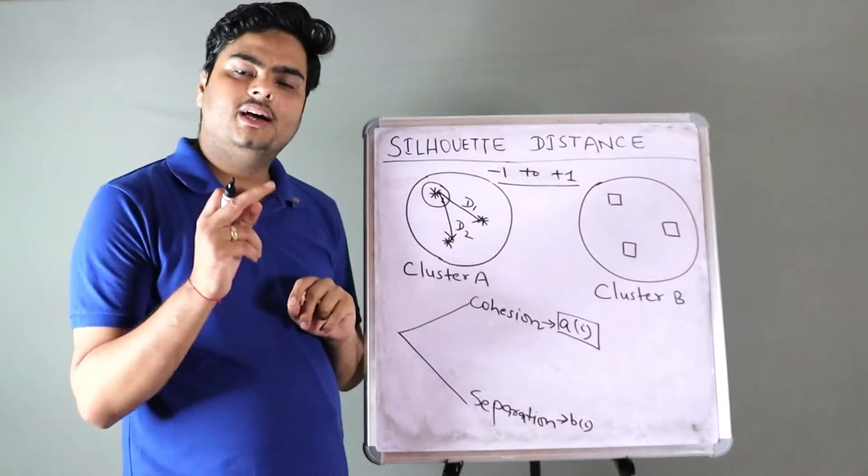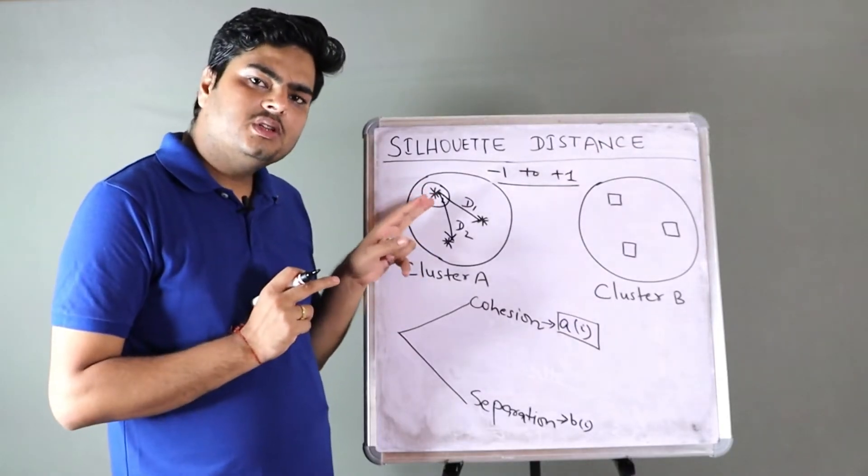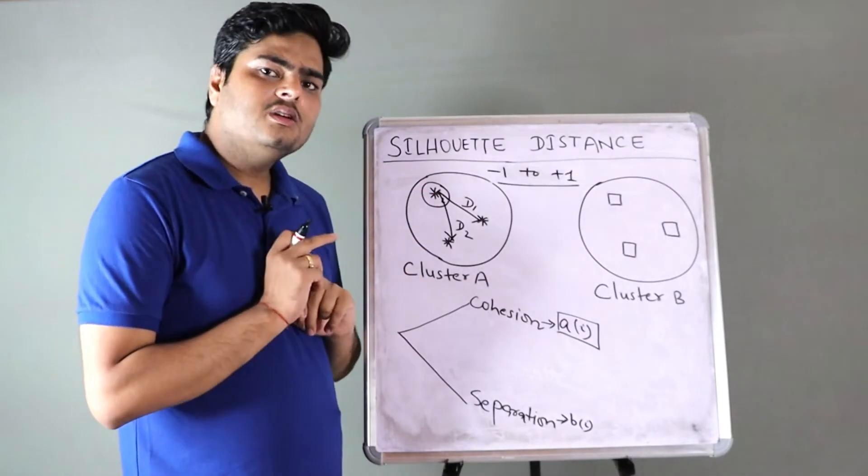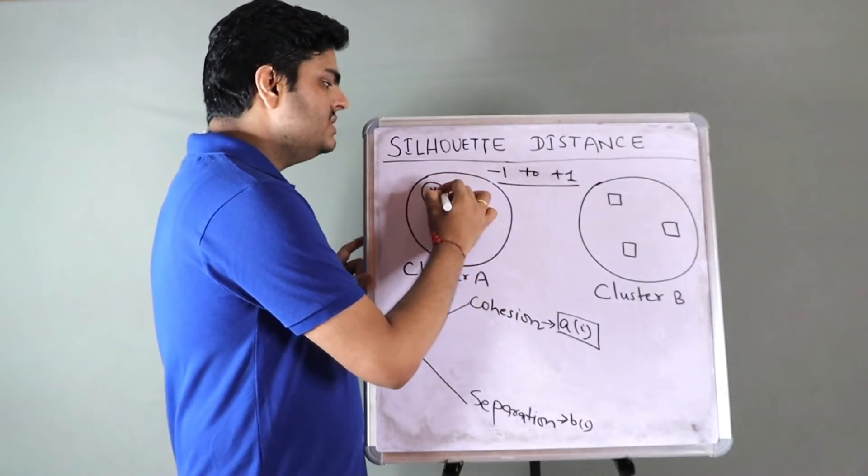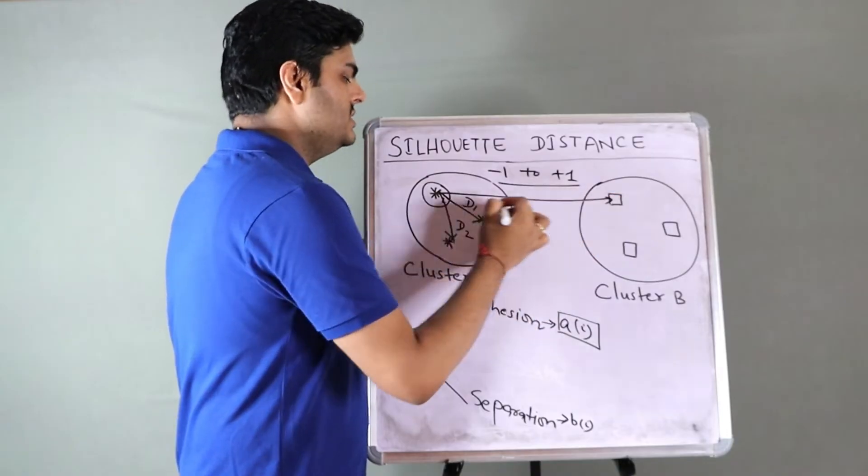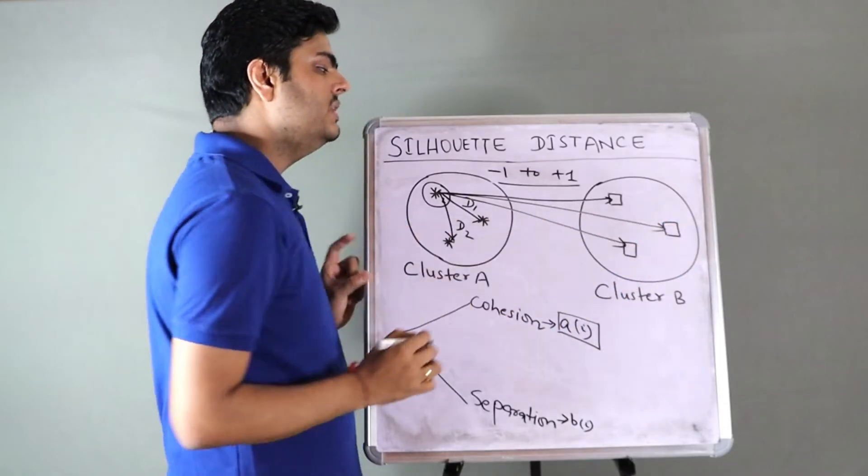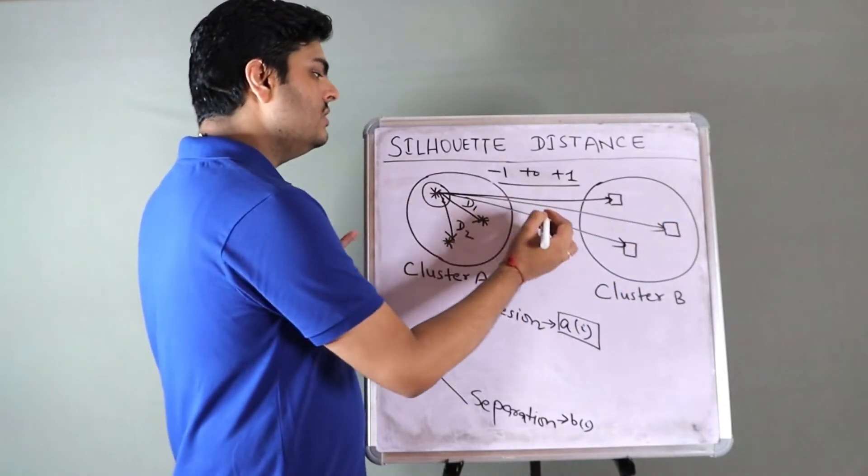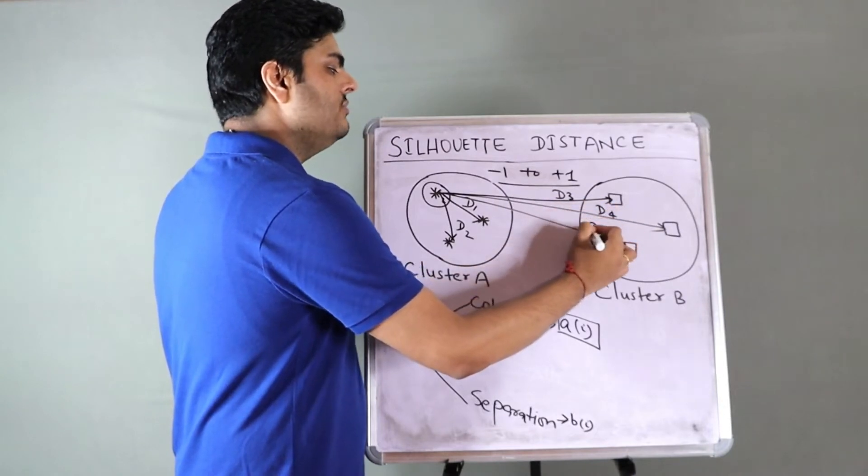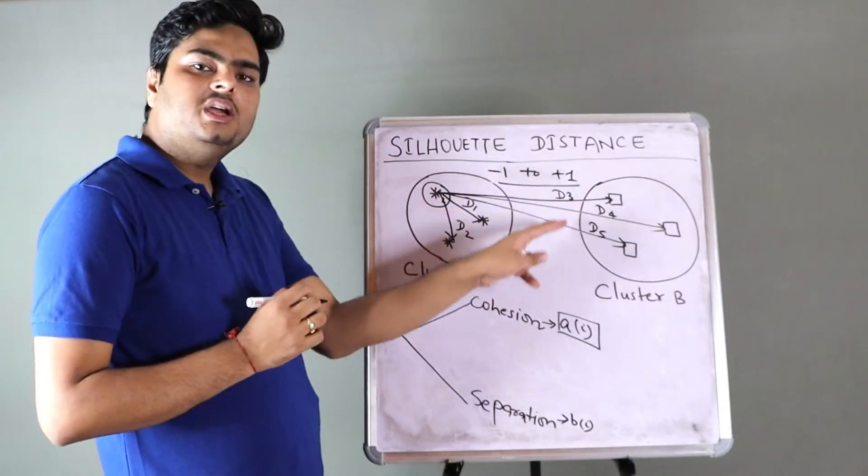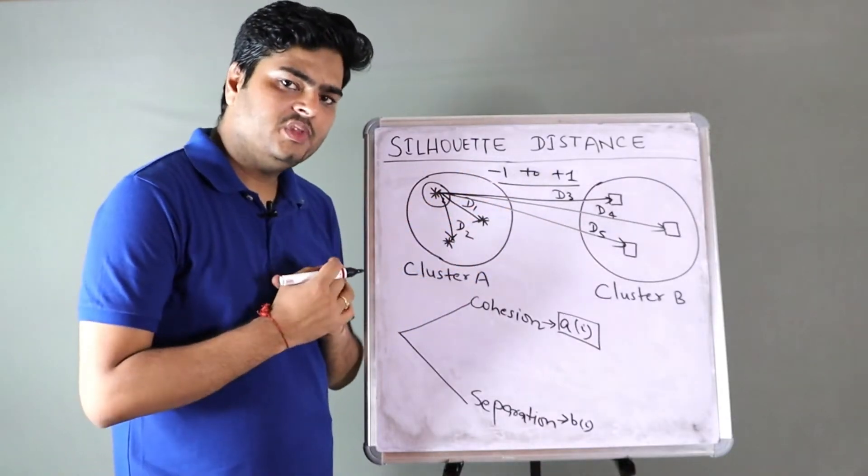Forget all the mathematical formulas. What this AI is, it is nothing but mean of all the distances within cluster from this point. So compute the distance of this point from this point, let's call it D1. Compute the distance of this point to this point, let's call it D2. When I say distance, remember Euclidean or Manhattan distance, typically Euclidean distance.